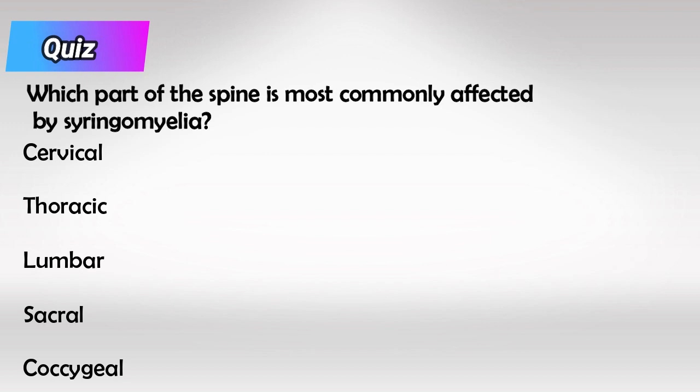Here's a small quiz — where do we see syringomyelia, which is associated with type 1? We see it in the cervical spine. On the other hand, meningomyelocele occurs in the lumbar area.